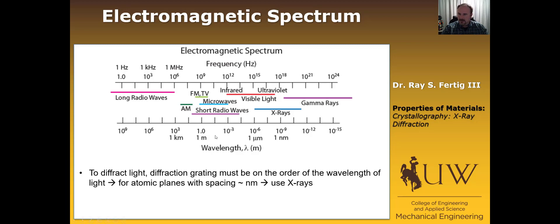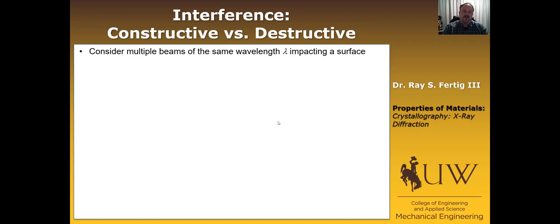We know a little bit about the atomic spacing of atoms and the distances between planes — it's on the order of about a nanometer. So if we want the atomic planes to diffract an electromagnetic wave, we have to choose a wave in that regime, which means we must use X-rays.